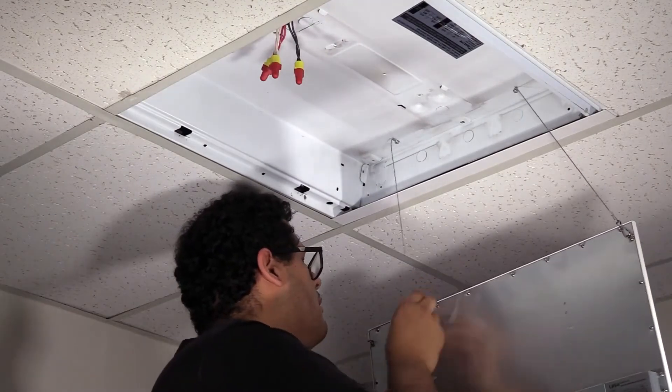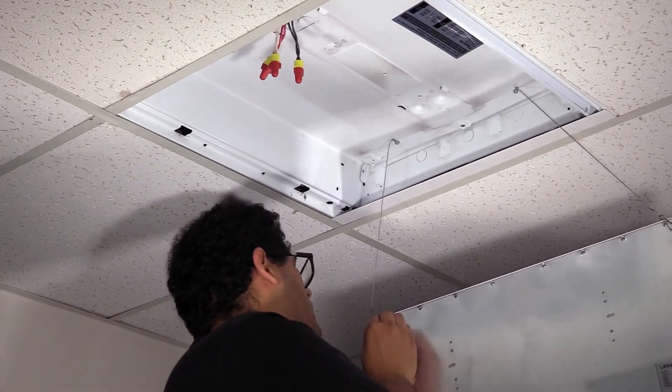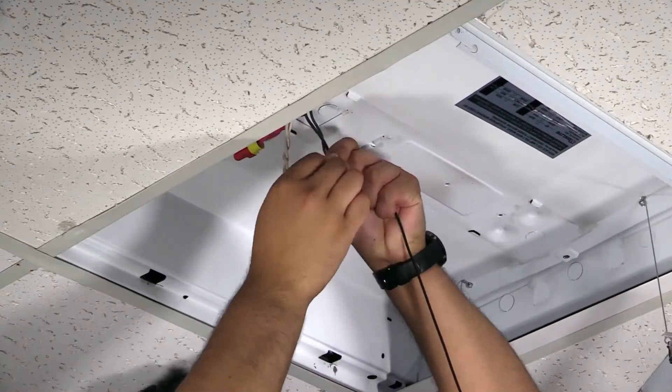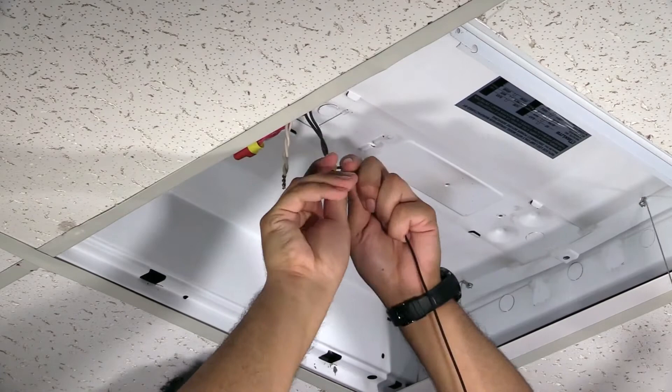Now we'll hang the retrofit fixture from the safety cables we attached earlier. Once it's securely attached to the cables, we can begin making our wiring connections.